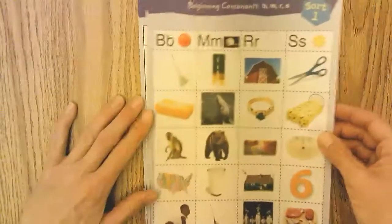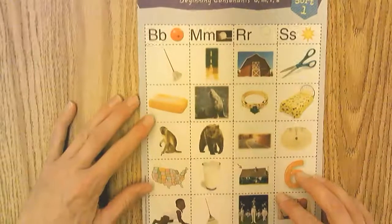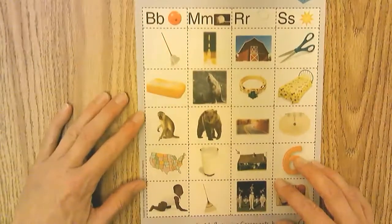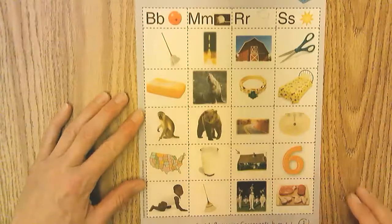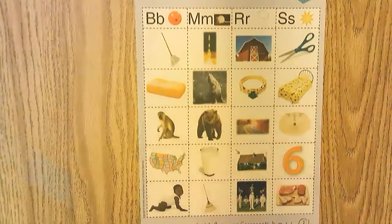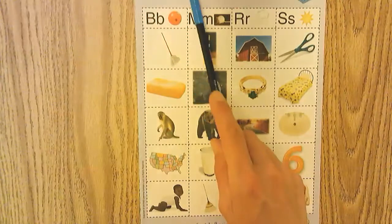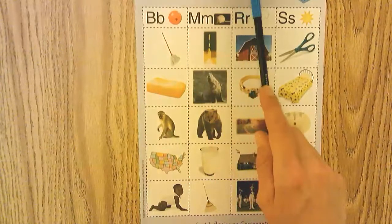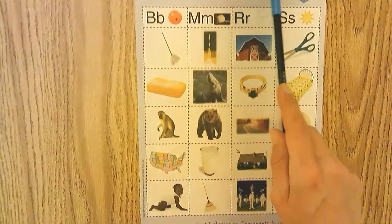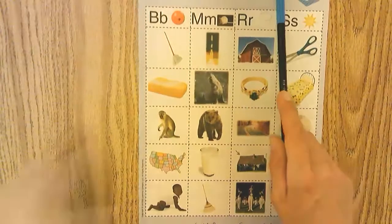We're going to read each of these words together. You should repeat each of the words, and then I will pause the recording so I can cut them. We are going to be sorting words that are starting with beginning consonants, the B, M, R, and S. So all these words will start with the sounds.